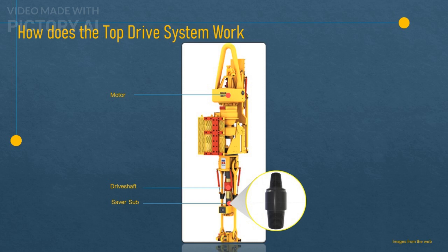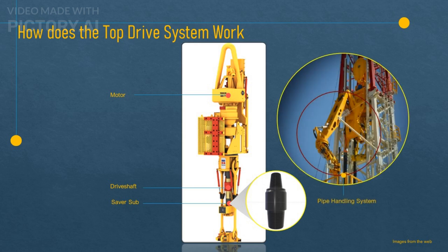As we drill deeper, we need to add more pipes to extend the drill string. With the top drive, we can add more pipes in longer sections called stands. A stand usually consists of three joints of pipe that measure about 90 feet long. This means that every 90 feet of drilling or tripping requires a connection time. We use the pipe handling system of the top drive, which has built-in makeup and breakout and spinning tongs that can automatically handle the pipes without manual intervention by the crew. The top drive can also move up and down along a track on the derrick, allowing it to reach the pipe racks without having to lower the traveling block.